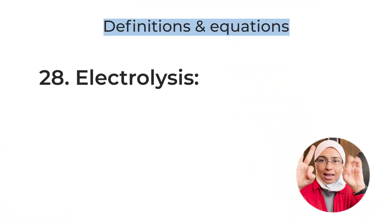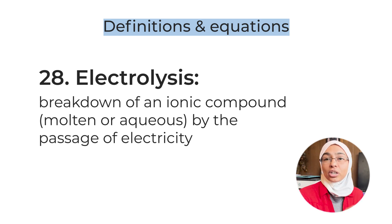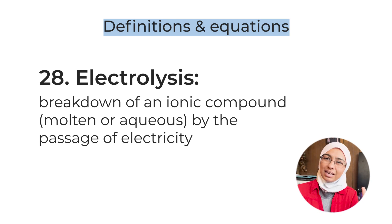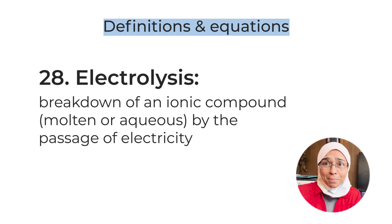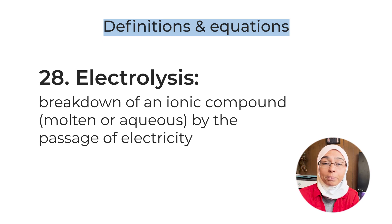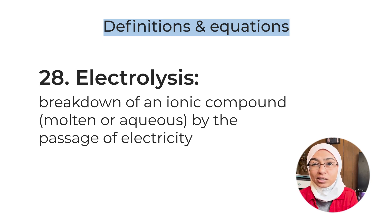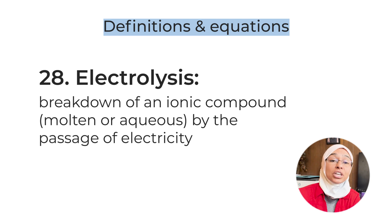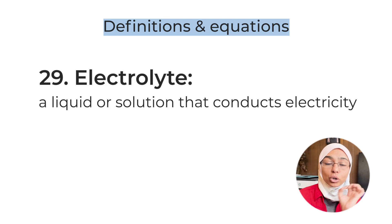Back to definitions. Definition number twenty-eight: electrolysis — a very common direct question worth two or three marks. Electrolysis is the breakdown of an ionic compound, whether molten or aqueous, by the passage of electricity. Definition number twenty-nine: electrolyte — a liquid or solution that conducts electricity.